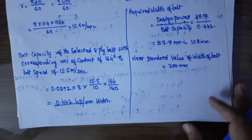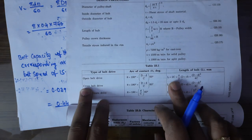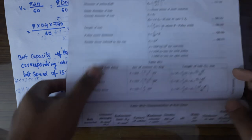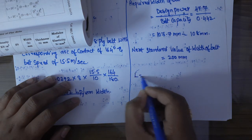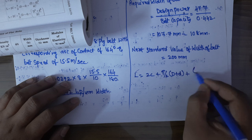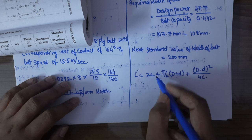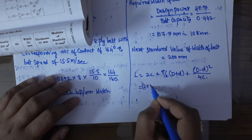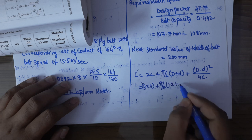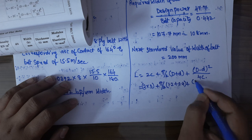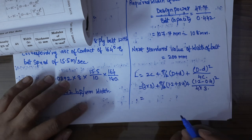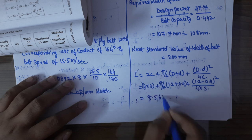The belt length is calculated using the formula from page 23.4, table 23.1: L = 2C + (π/2)(D + d) + (D − d)² / (4C). Substituting: L = 2×3 + (π/2)(1.2 + 0.4) + (1.2 − 0.4)² / (4×3) = 8.566 meters.